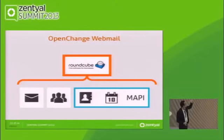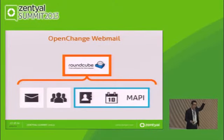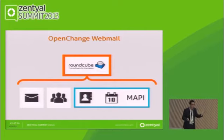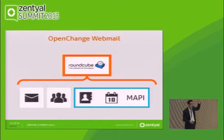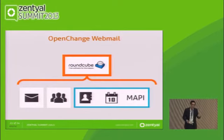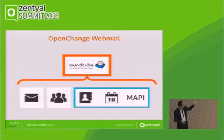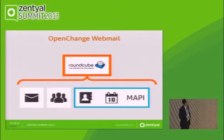In the end, when you are using Roundcube, emails go directly to IMAP, contacts from the global address list are fetched directly from LDAP — the LDAP interface from the Samba Active Directory — personal contacts are fetched directly through an OpenChange server into the backend, and the calendar is also fetched this way.